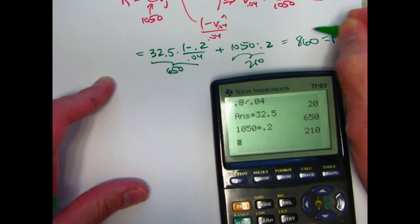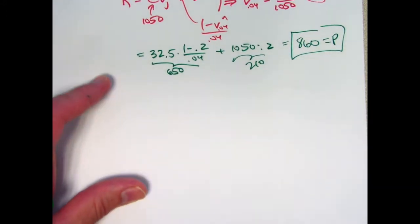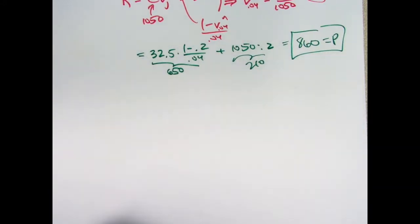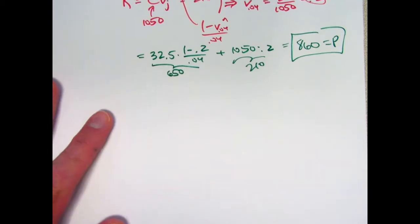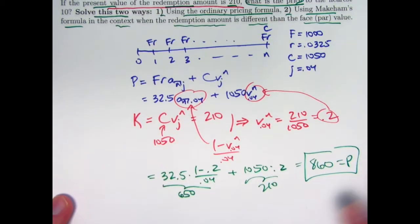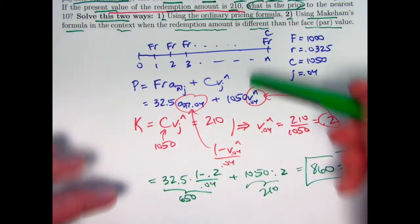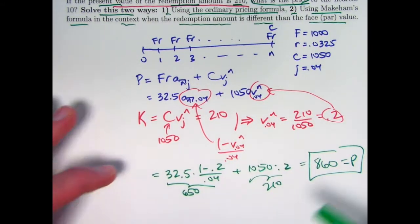So the final answer is 650 plus 210 is 860. That is the price. And already it is to the nearest 10. You don't need to round. It already comes out that way. That's solving using the ordinary pricing formula, except C is not equal to F.